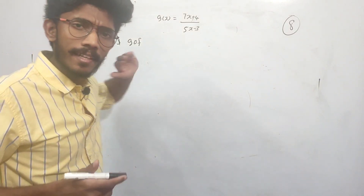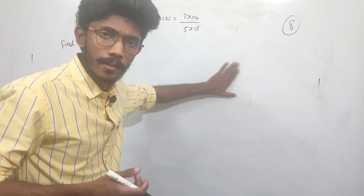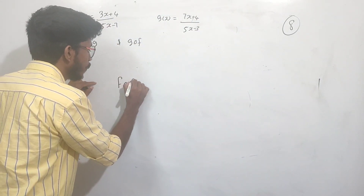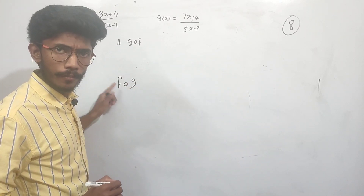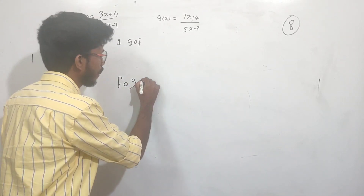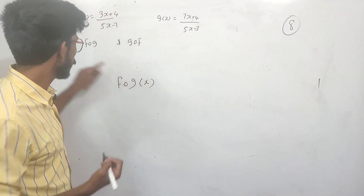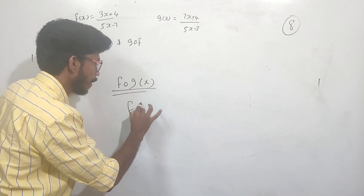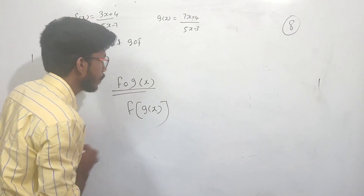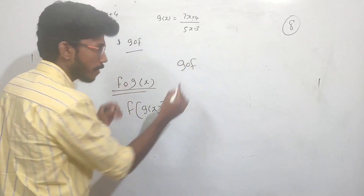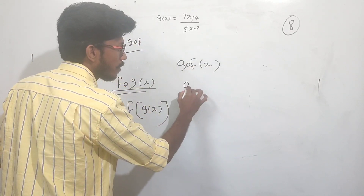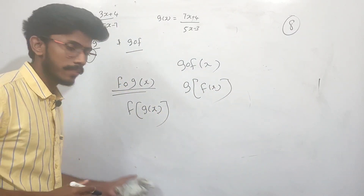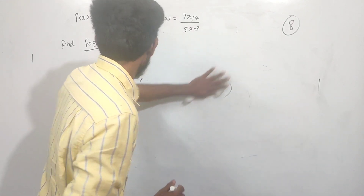Next, what is the composite function? The composition of f and g is written as f∘g. You can write it as f of g of x. Similarly, g∘f means g of f of x.